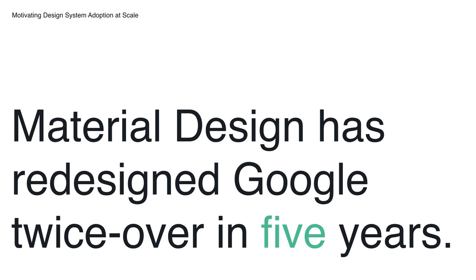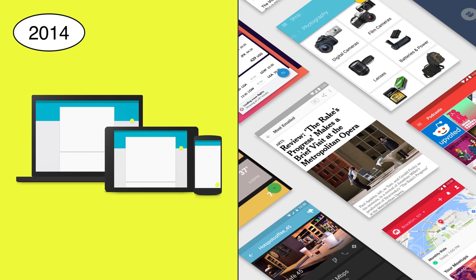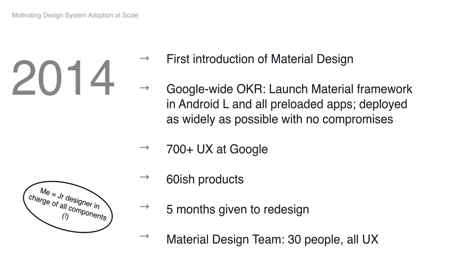Material Design is a design systems group that redesigned Google twice over the course of five years. We've also open-sourced our design system for anyone to use. We first launched in 2014 with a robust and bold set of components and guidelines, and it was a hit — millions of Android apps, web apps, and some iOS apps were using our guidelines within just a few years. We had a Google-wide initiative, largely mobile-focused, around 700 UXers at Google, about 60 products to redesign, and we gave them about five months. We drove this as a small group of about 30 designers. Personally, I was a junior designer tasked to design all of the components.